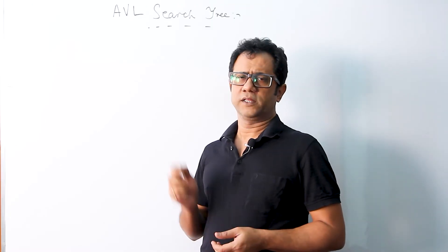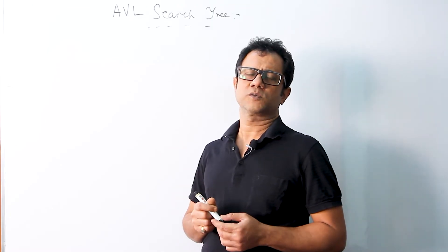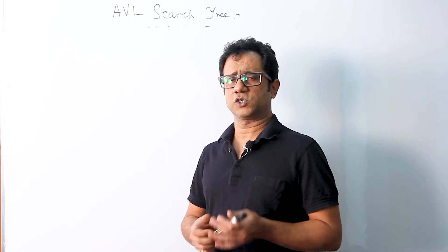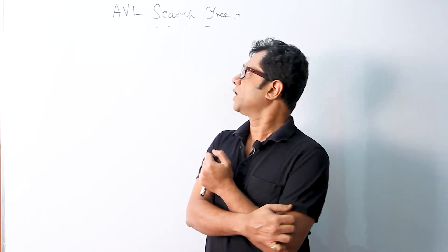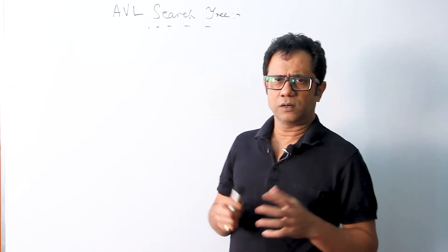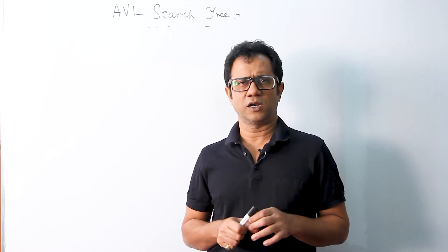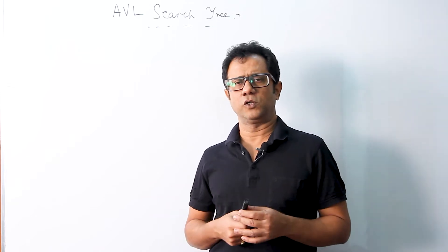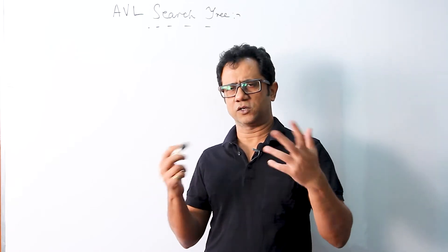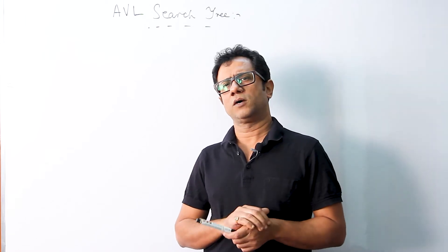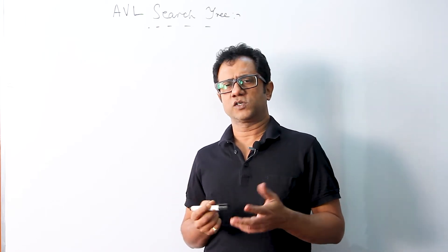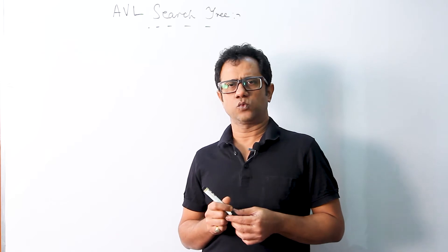Hello friends, today in this video I am going to explain one of the deletion processes in the case of an AVL search tree. We have dealt with some other cases of deletion in our previous videos, but in this video I am going to explain another deletion method in which we will apply a rotation which is called the R minus one rotation.